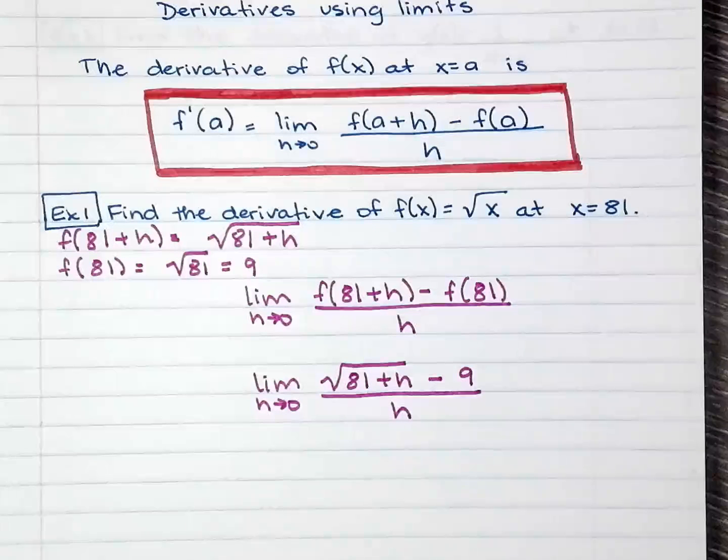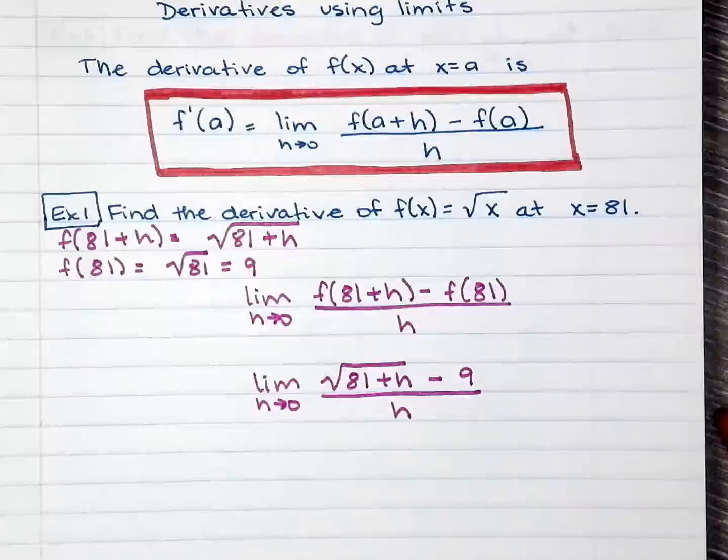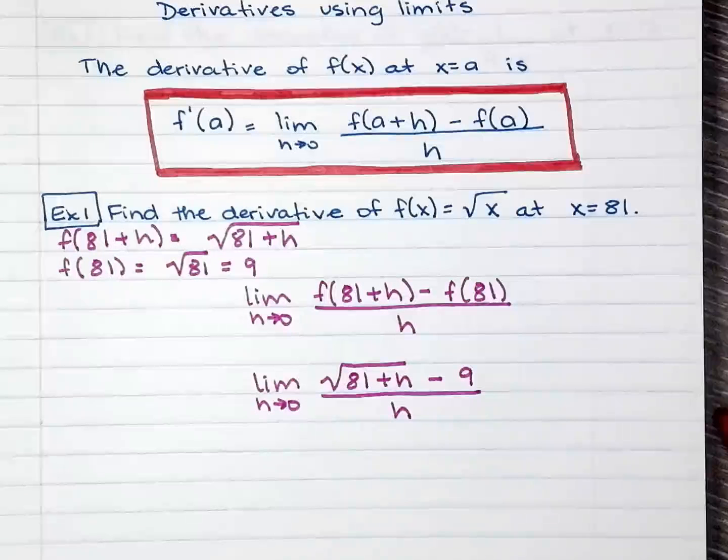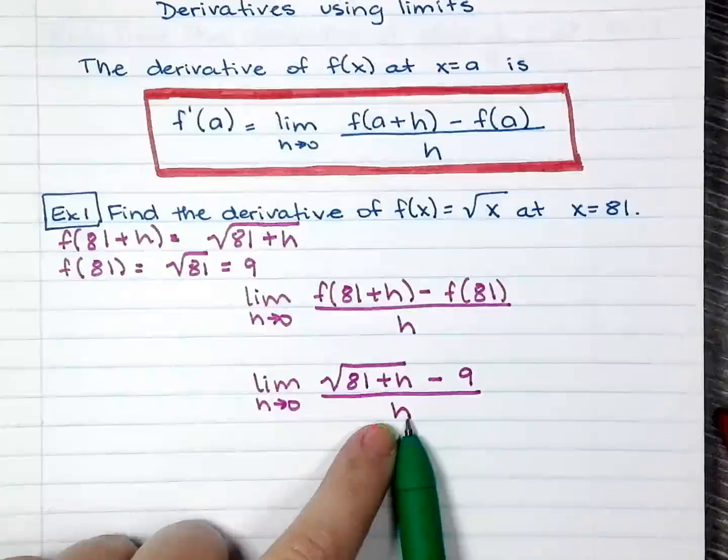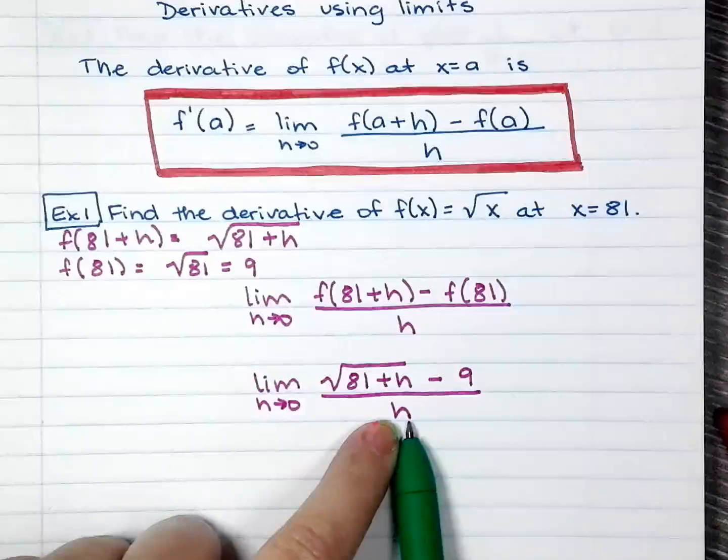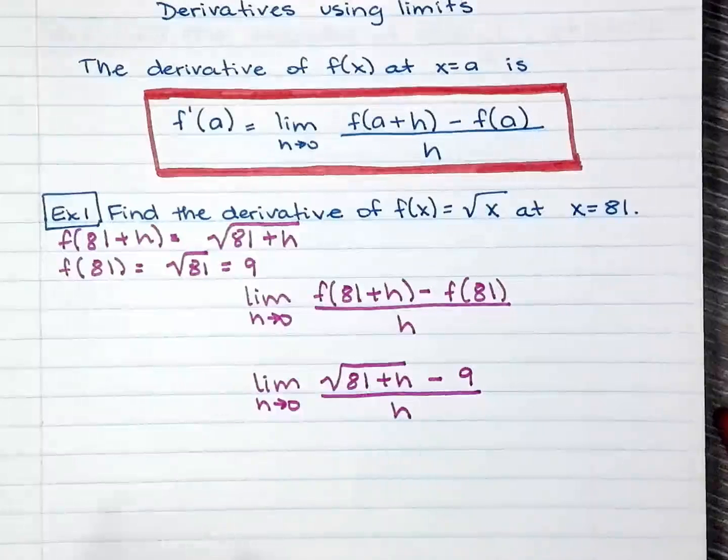Now when we were solving limits, when we spent the whole semester solving and working with limits, when you had something like this you can just simply plug in zero for h because you can't divide by zero. So at this point you need to rationalize the numerator.